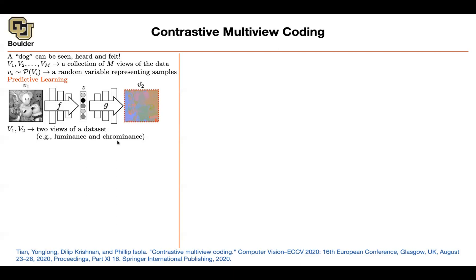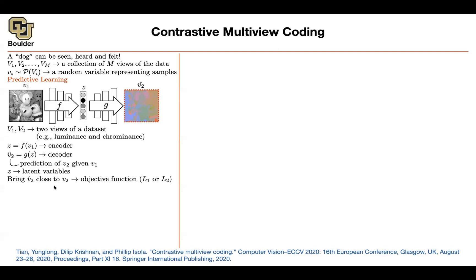This could be the luminance and chrominance channels. Z is going to give us V1 when pushed through your encoder. G is going to be the decoder, giving you V2 — the prediction of V2. Z is your latent variable, and then you want the prediction of V2 to be similar to the ground truth V2, using one of these objective functions: Smooth L1, L1, L2 — you name it.